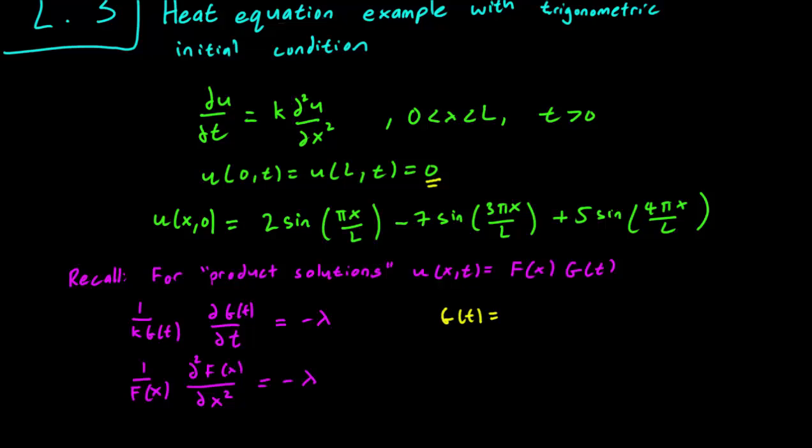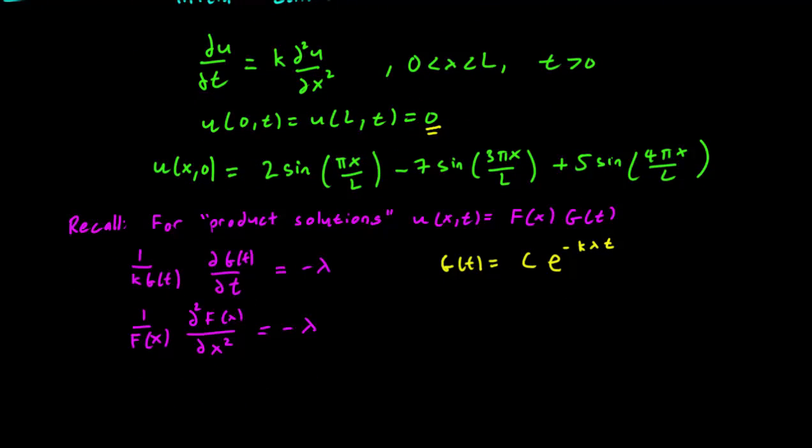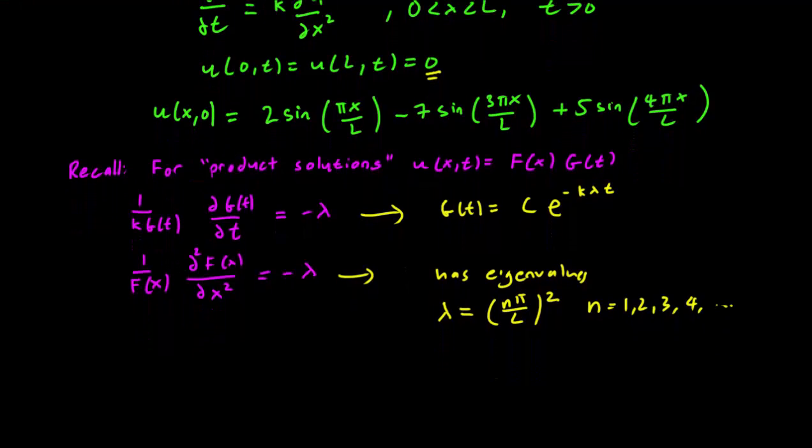The second equation, the one in x, is an eigenvalue problem. For this one, we can say that our eigenvalues are λ = (nπ/L)² for n = 1, 2, 3, 4 and so on. Those are the eigenvalues and those are the only λ for which we get a non-zero solution.